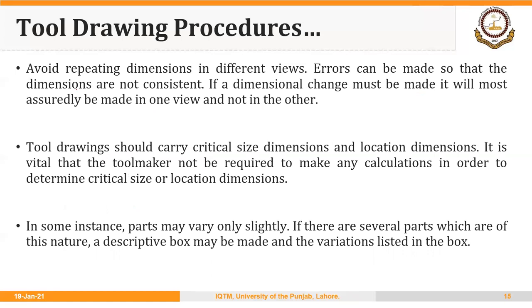Two more points: first, avoid repeating dimensions in different views — if a dimension is mentioned in one view, do not repeat it in a second view. Also, show the critical size dimensions on the drawing so that the tool maker is not required to make calculations. You can find examples from Hoffman's book on critical size dimensions. These are some important and relevant guidelines for tool drawings. In the next segment we will discuss specific examples of tool drawings. Thank you very much.